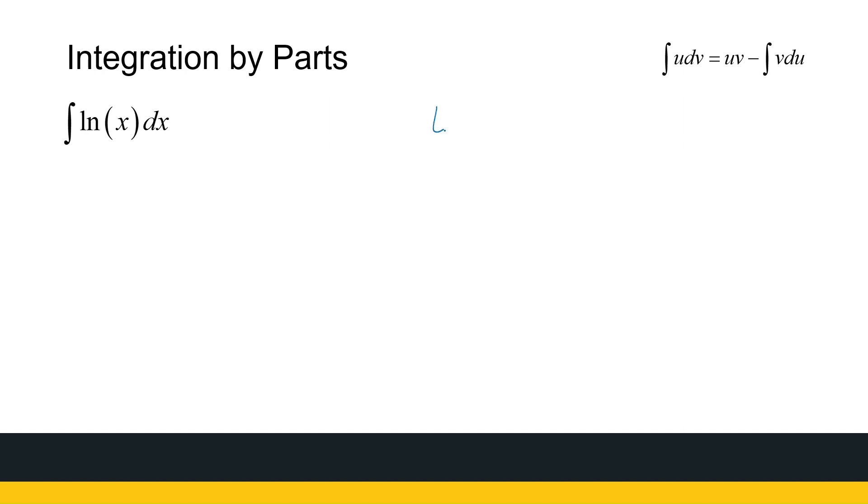I'm going to say, let u be equal to ln(x). Now the reason I choose u equal to ln(x) is because I can differentiate ln(x), and then dv is just the dx portion. So if u is ln(x), then du is 1 over x dx. If dv is dx, then v is just x.